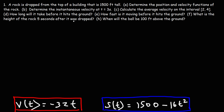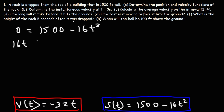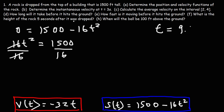Part D: How long will it take before the rock hits the ground? When the rock hits the ground, its height is 0, so we set s(t) equal to 0 and solve for t. Adding 16t squared to both sides gives 16t² = 1500. Dividing both sides by 16 gives t² = 93.75. Taking the square root gives t approximately equal to 9.68246 seconds.